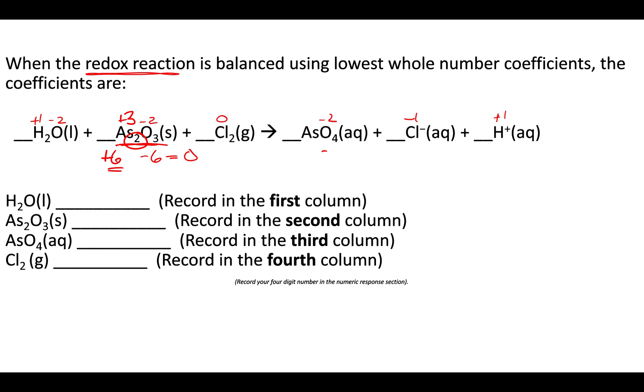On this side over here, oxygen would be negative eight, and all together because there's four of them, so AS has to be positive five. Now that's just your beginning.